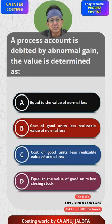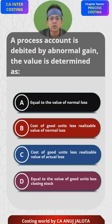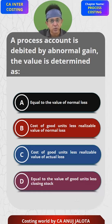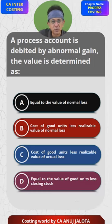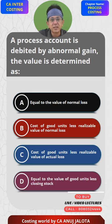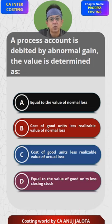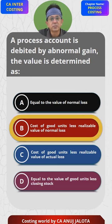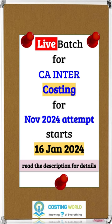This is exactly what Option B states: cost of good units produced extra, less the realizable value of normal loss. So the answer is B — that's the correct answer.